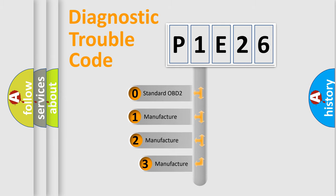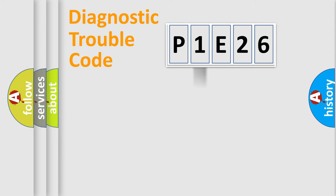If the second character is expressed as zero, it is a standardized error. In the case of numbers 1, 2, or 3, it is a more prestigious expression of the car-specific error.